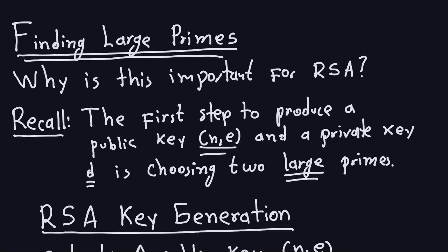Remember when we did the RSA, we have to find a public key and a private key. The first step to produce a public key N and E — where N is the modulus and E is the public exponent — and a private key D which only Bob knows, is choosing two large primes. Now we didn't go into the details on how to choose large primes.